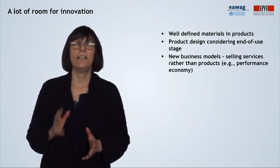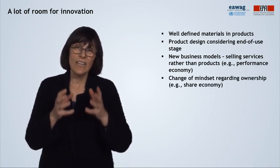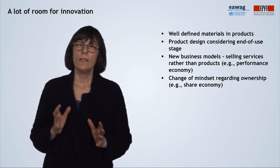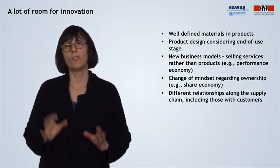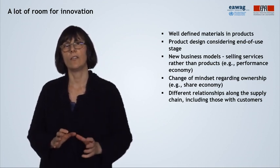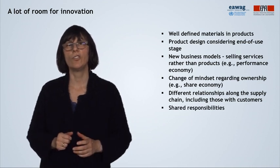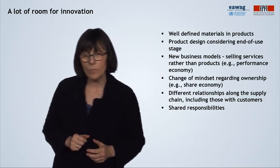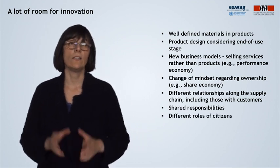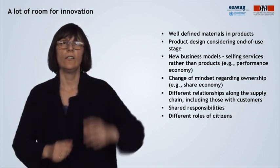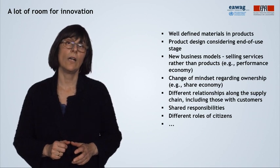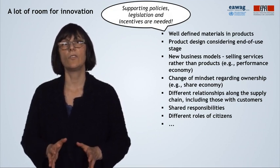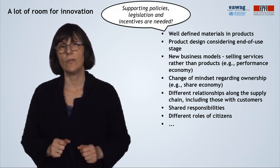This also includes our relationship to ownership. Do we actually need to possess and own a product, or are we perfectly happy with the service it provides us? This also means that new types of relationships are needed along the supply chain, where trust among partners has a prominent role, because it is about sharing proprietary information about materials and parts. Citizens have a new role as well — they have to make sure that materials indeed return into the next production cycle. And government also has a role, because it can provide supportive policies, legislation, and incentives to enable and support such developments in society.